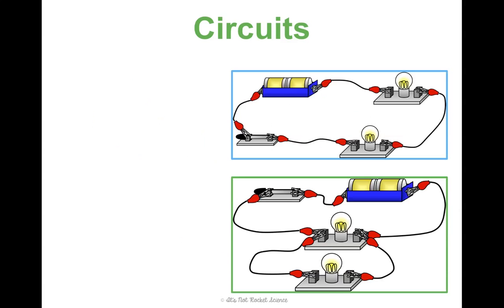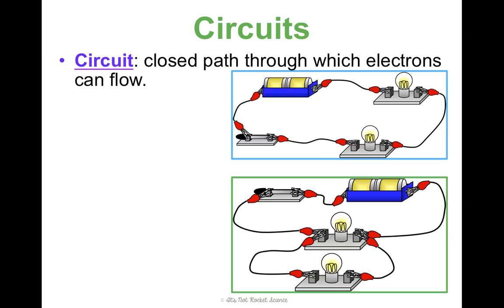Circuits — we mentioned this in Concept 2. It's a closed path through which electrons can flow. You've seen some pictures like this, but now we're going to dive in more to these circuits.